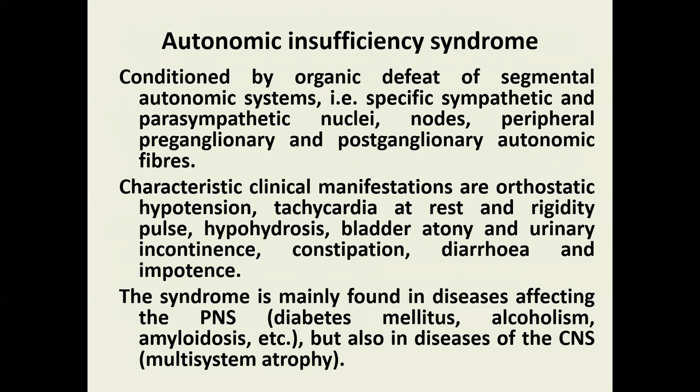Autonomic insufficiency syndrome is conditioned by damage to the segmental autonomic system, including specific sympathetic and parasympathetic nuclei, nodes, and peripheral pre-ganglionic and post-ganglionic autonomic fibers. Its characteristic clinical manifestations are orthostatic hypotension, tachycardia at rest, rigidity of pulse, hyperhidrosis, bowel and bladder atonicity with urinary incontinence, diarrhea, and impotence. The syndrome is mainly found in diseases affecting the peripheral nervous system, such as diabetes and alcoholism, but also in central nervous system diseases like multisystem atrophy.